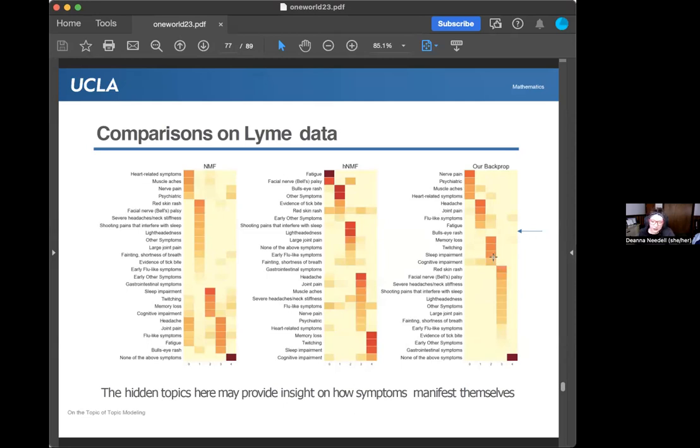The other thing they found interesting was this middle topic here, which is memory loss, twitching, sleep, and cognitive impairment. The fact that there's a cluster of patients with that group of symptoms suggests that there's this neurologic manifestation, which is something that the clinicians have started to uncover. A lot of the research has been showing that Lyme manifests in cardiac ways and neurologic ways and musculoskeletal ways, and this suggests that those patients are indeed isolated from the others. They appear in their own topic. This looks like maybe a neurologic manifestation.